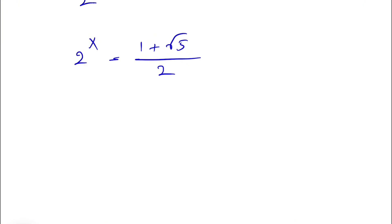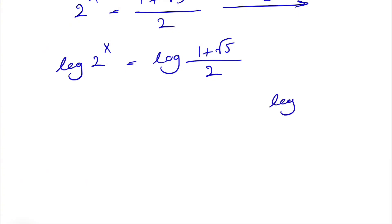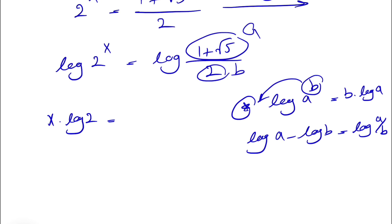To solve for x, we take the log of both sides: log(2^x) equals log((1 plus the square root of 5) divided by 2). Recalling logarithm laws: log(a^b) equals b times log(a), and log(a) minus log(b) equals log(a/b). On the left side we apply the first law to get x times log 2. On the right side we write log(1 plus the square root of 5) minus log 2.